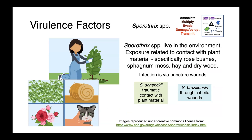Sporothrix lives in the environment, and exposure of people or animals is generally through contact with plant material. Rose bushes, sphagnum moss, hay, and dry wood have been identified as particularly at-risk products. Infection is via puncture wounds, so this is typically a cutaneous infection — animals get infected when they have traumatic contact with plant material. Sporothrix brasiliensis tends to cause infections when people or animals are bitten by an infected cat.